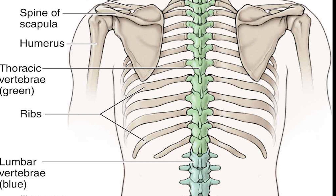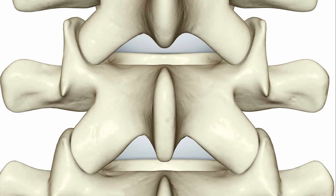The most frequent deviations are 11, and rarely 13, thoracic vertebrae; 4 or 6 lumbar vertebrae; 3 or 5 coccygeal vertebrae, and rarely up to 7. There are ligaments extending the length of the column at the front and the back, and in between the vertebrae joining the spinous processes, the transverse processes, and the vertebral laminae.